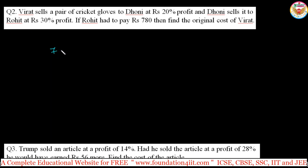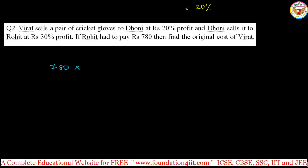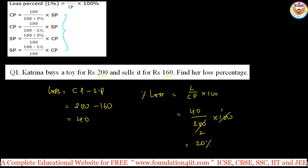You have to find the original cost price. The direct method: take 780 rupees, then work back to the original cost price. When you come to this cost price, you divide back by each preceding profit percentage.